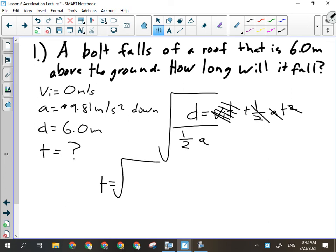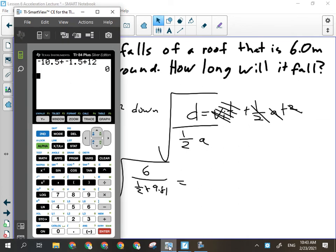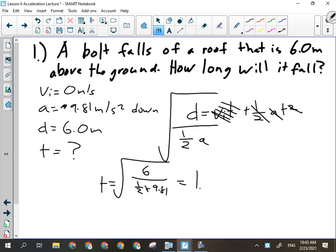In this case, time is going to equal 6 divided by one half times 9.81. I'm not making 9.81 negative because there's no change in direction here. Everything is down, so I'm just going to make down positive for simplicity. So what we're really looking at here is the square root of 6 divided by 4.905. So this thing is going to fall for 1.1 seconds.